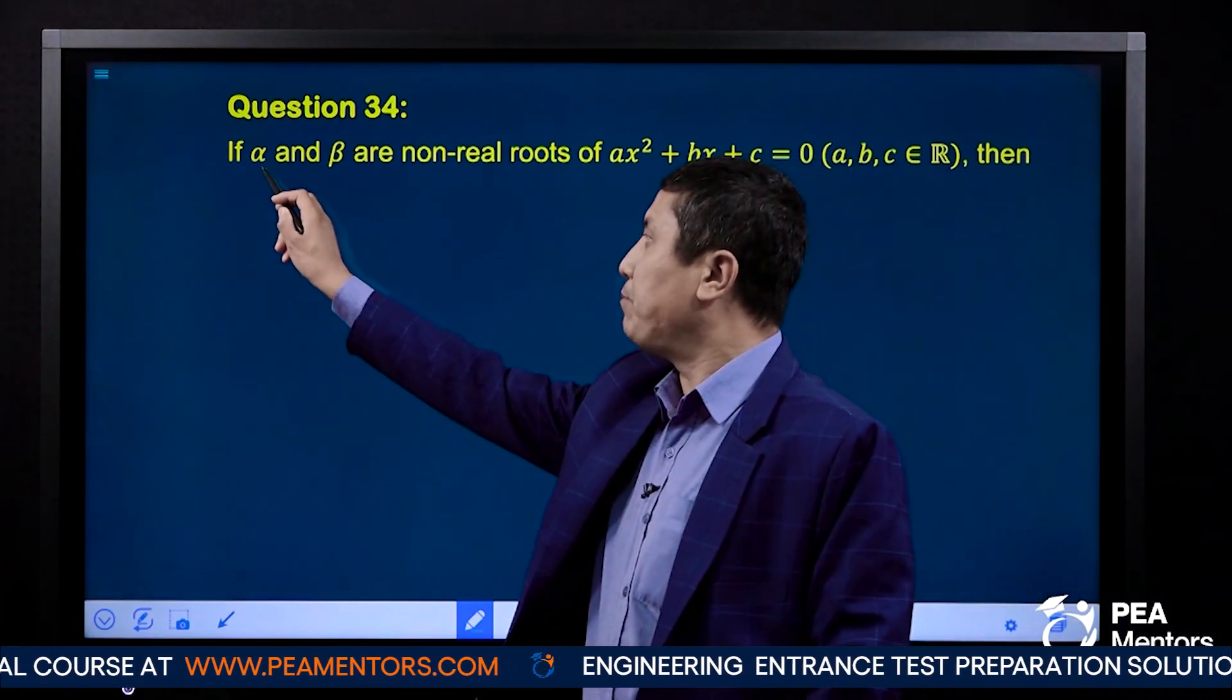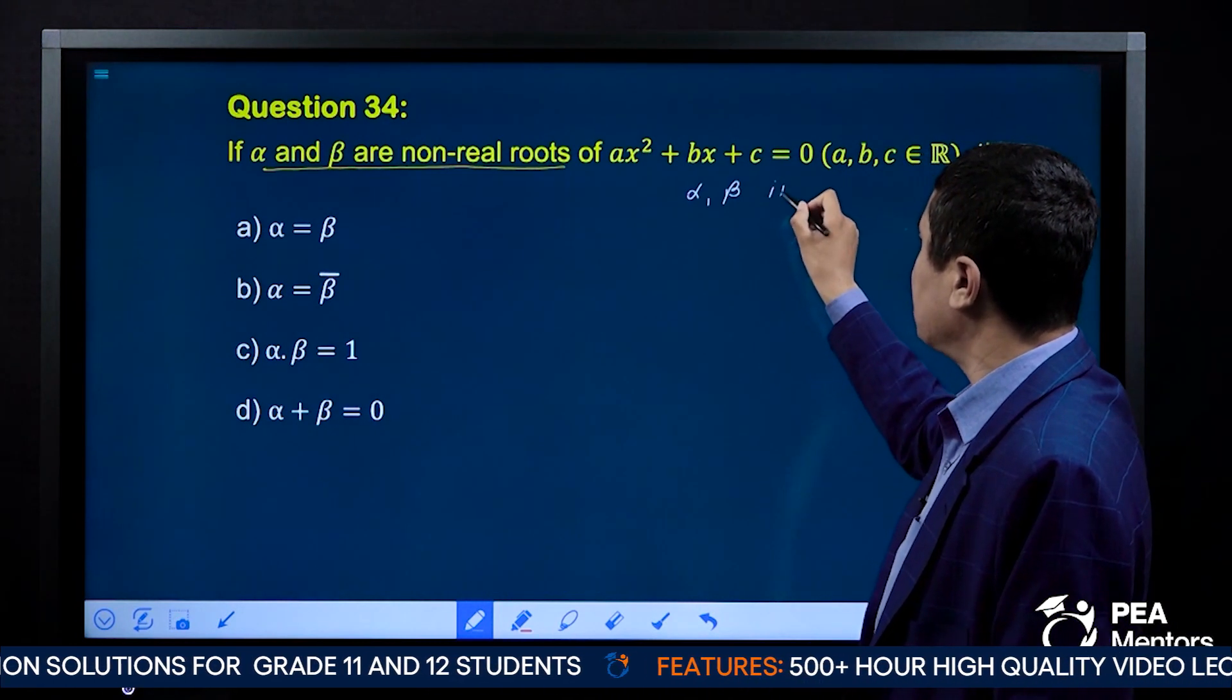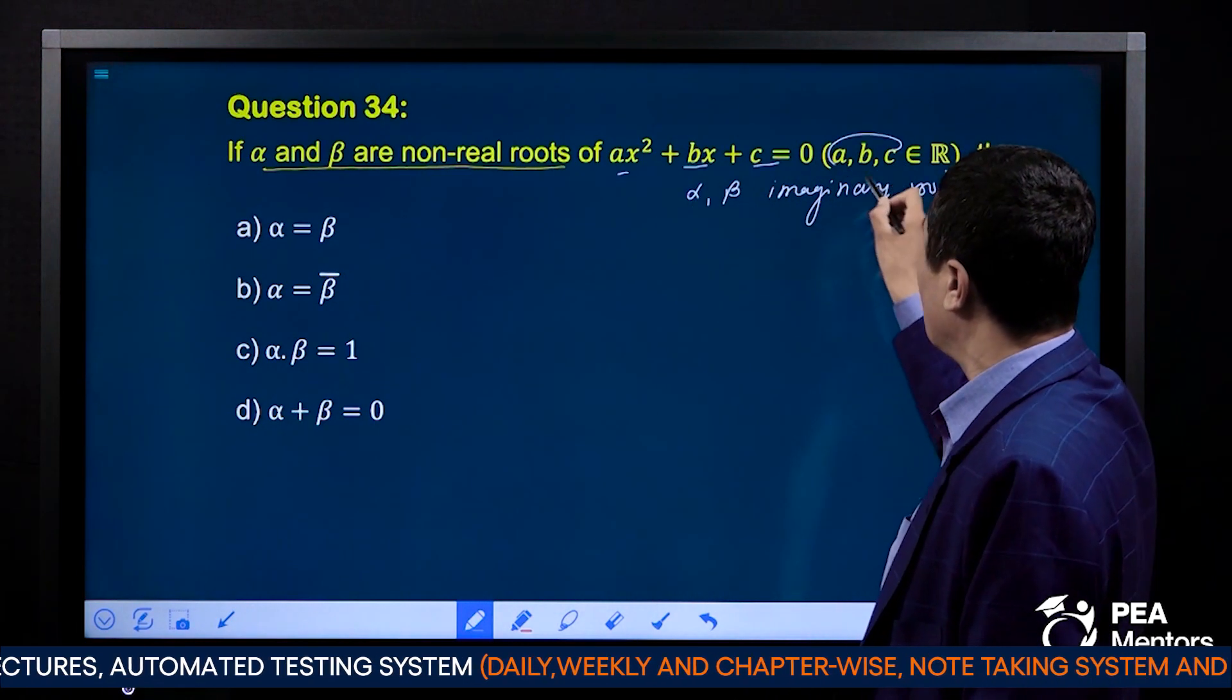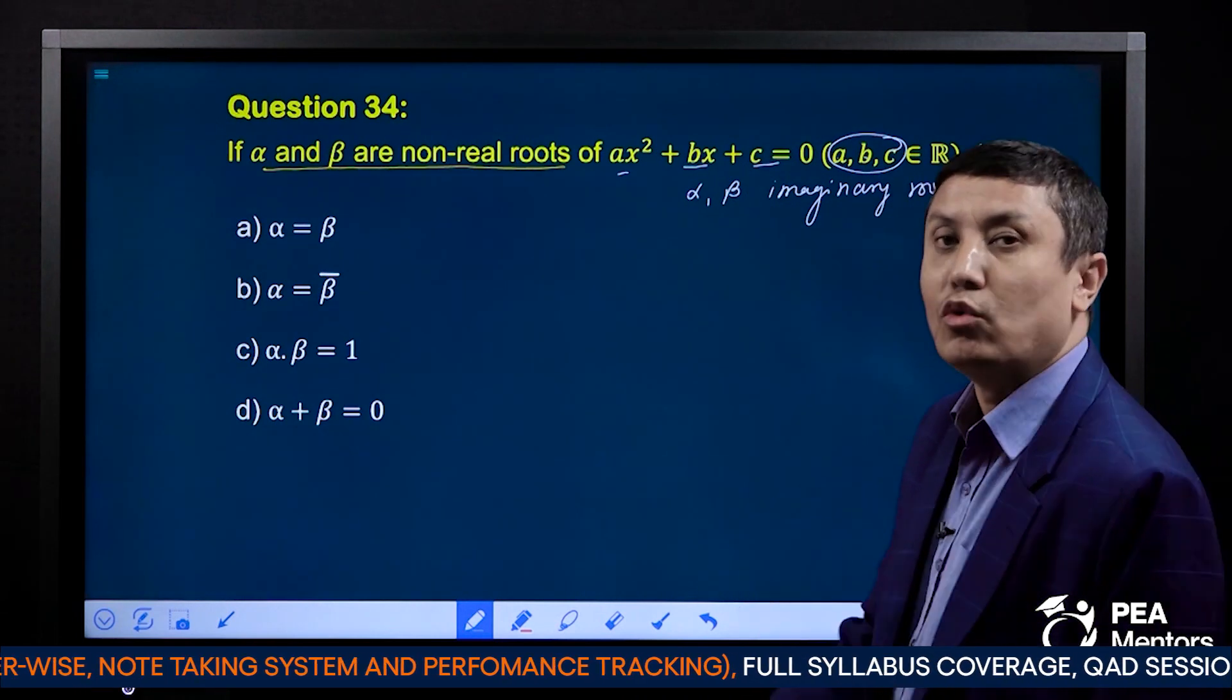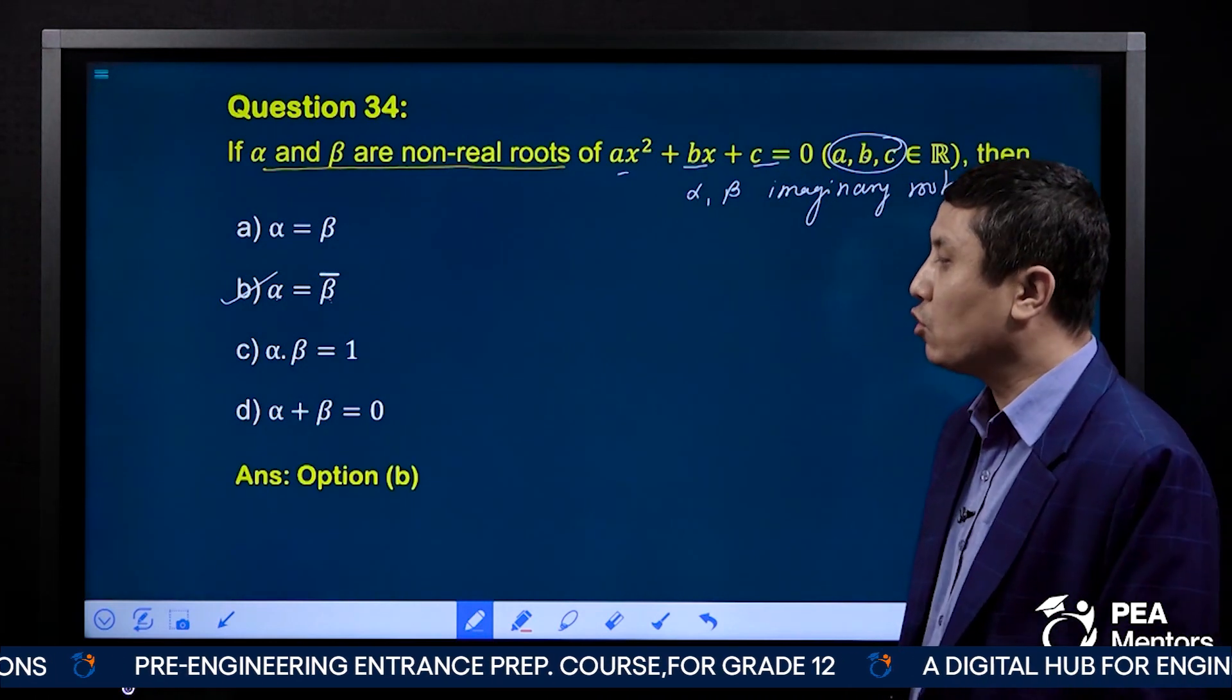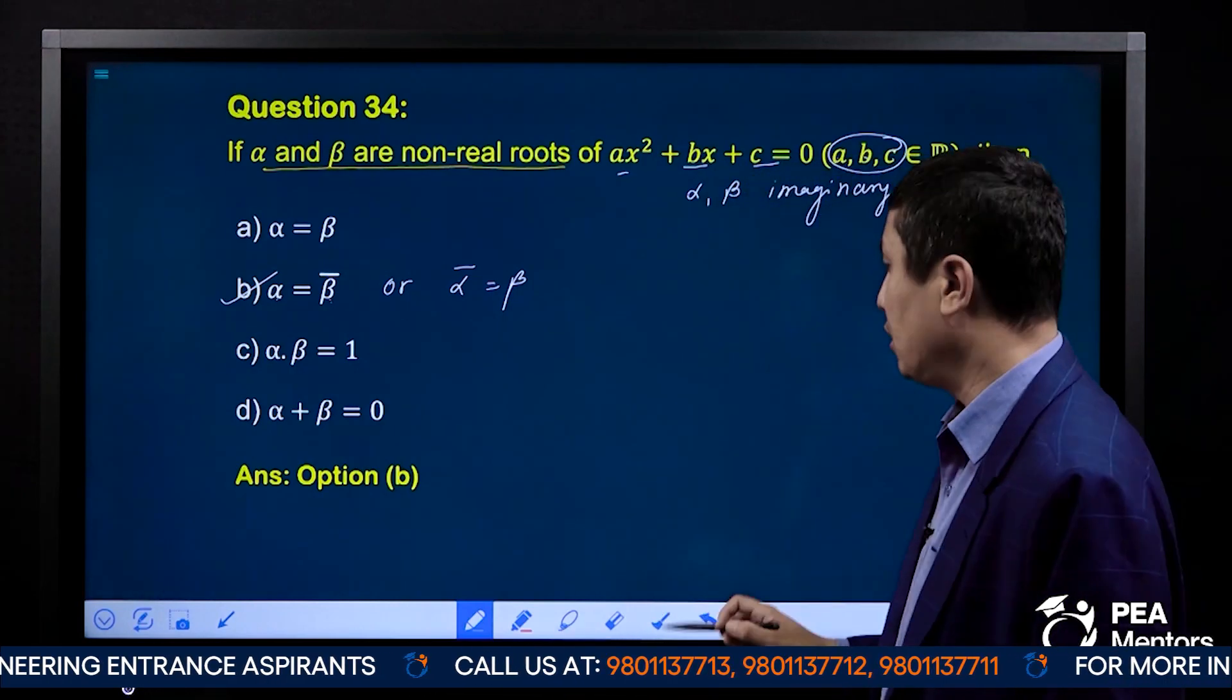Alpha and beta are non-real roots. Non-real meaning imaginary roots. Alpha and beta are imaginary roots. Imaginary roots, when the coefficient is real. In the point of this question, if alpha and beta are conjugate of each other, then either alpha is conjugate of beta, or beta is conjugate of alpha. Option is B. Alpha is conjugate of beta, and beta is conjugate of alpha. Right.